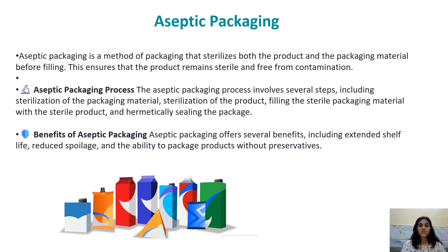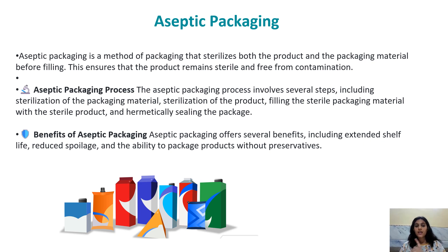The aseptic packaging process involves sterilization of the packaging material, sterilization of the product, filling the sterile packaging with the sterile product, and hermetically sealing the package. Aseptic packaging is fundamentally different from conventional canning: in canning, the food is treated before filling, enzymes are inactivated, the product is introduced into the package usually hot, air is removed, the package is hermetically sealed, and then subjected to heating — up to 100°C for high-acid products and up to 127°C for low-acid products.